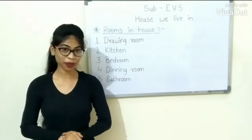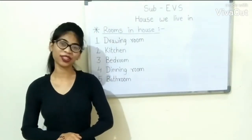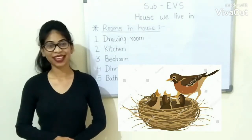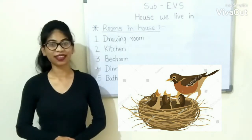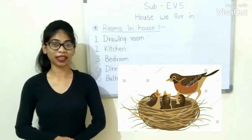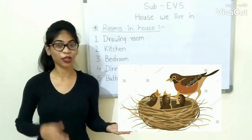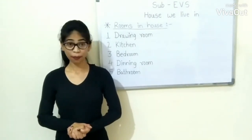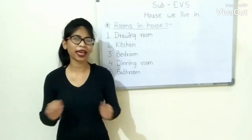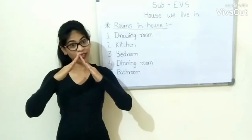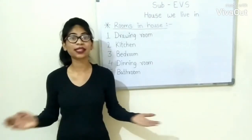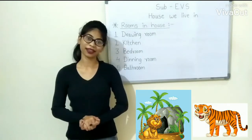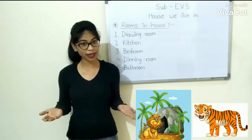Like us, animals and birds also need shelters. You must have seen bird nests. Nests are shelters that birds build. They use things like grass, straw and twigs to build nests. Some animals do not make any effort to build a shelter. They simply look around for a safe place. Like tiger and lion, they live in a cave and they are wild animals.